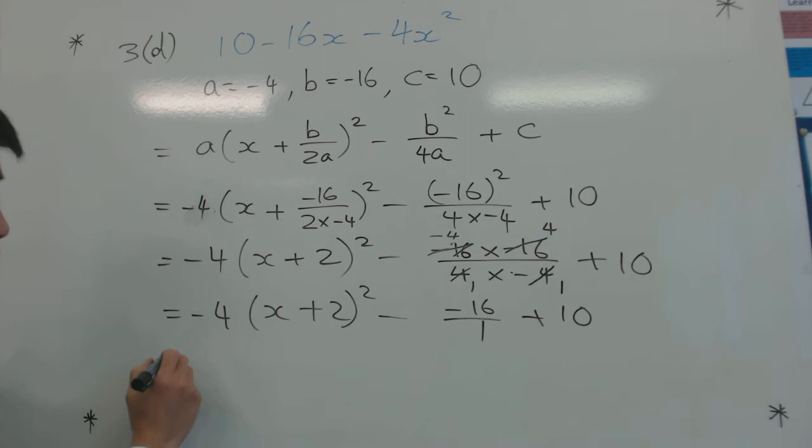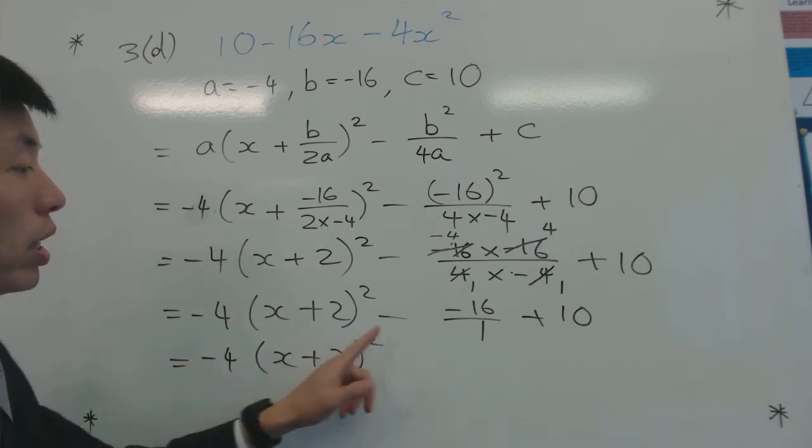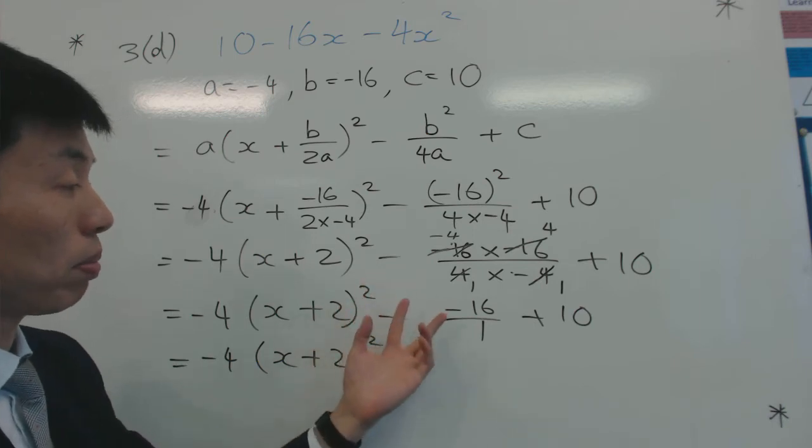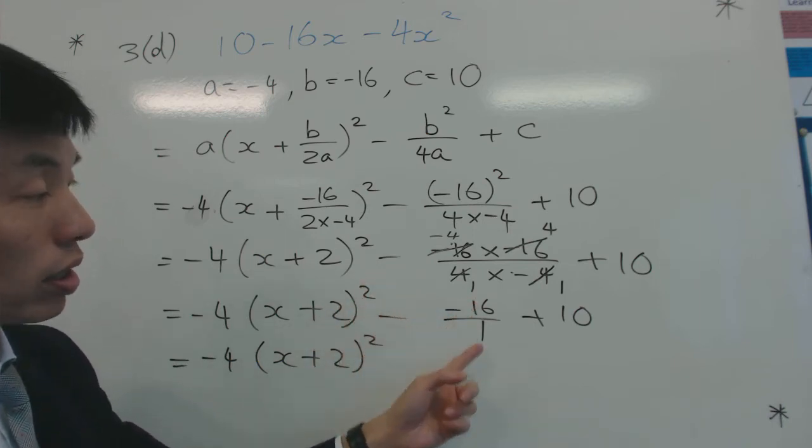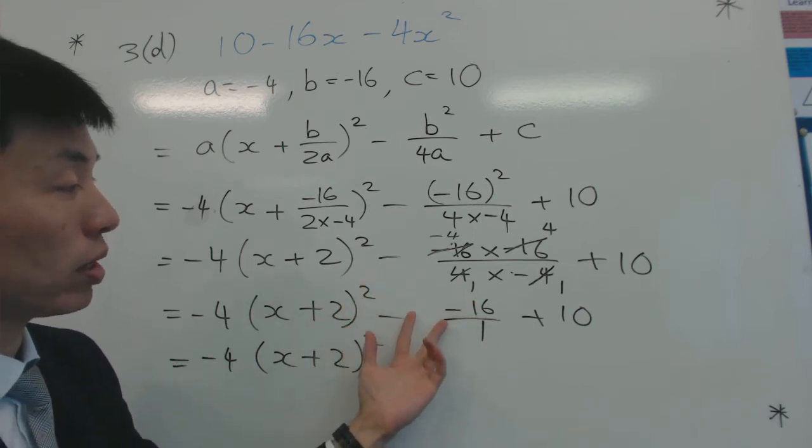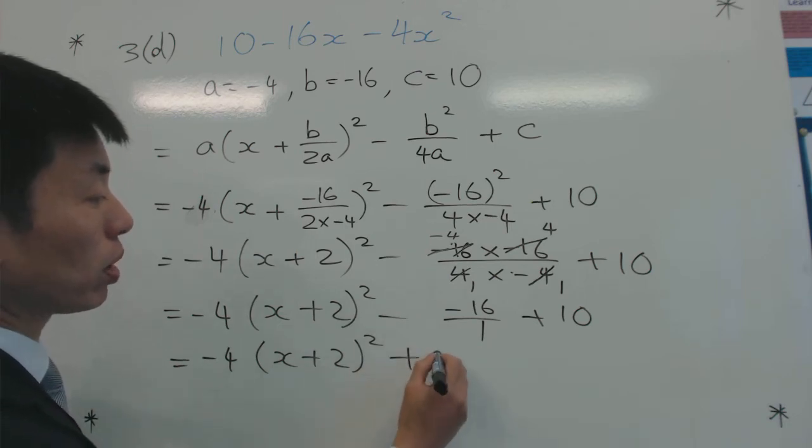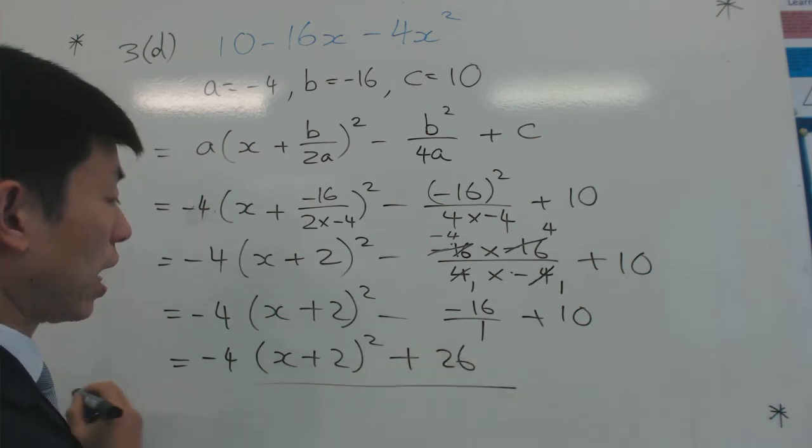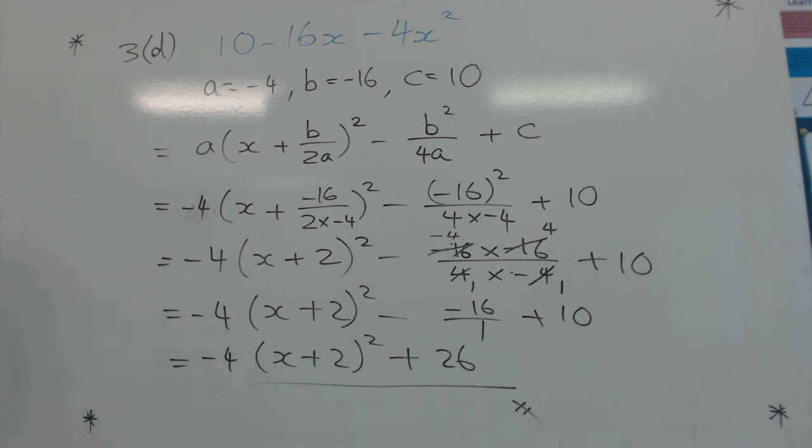So now you can see then, therefore, that minus minus makes a plus, so it's plus 16, because 16 over 1 is 16. So plus 16 plus 10 is going to be plus 26, and that is the final answer.